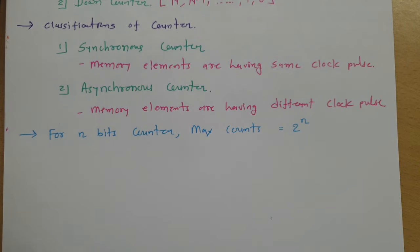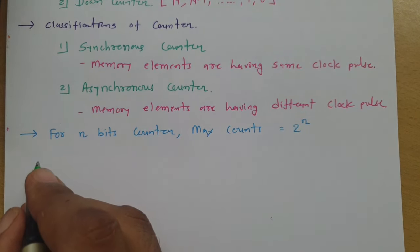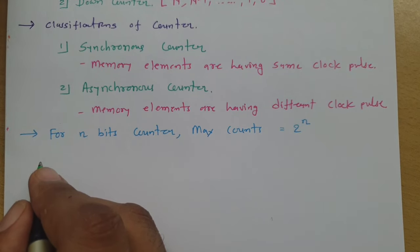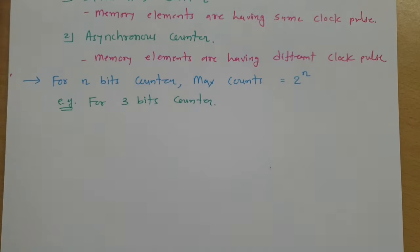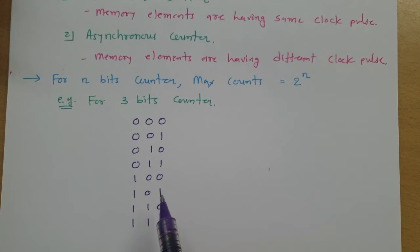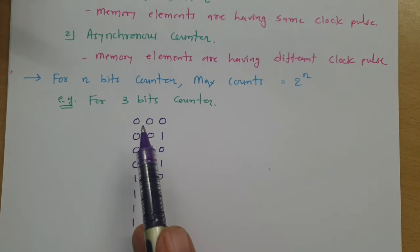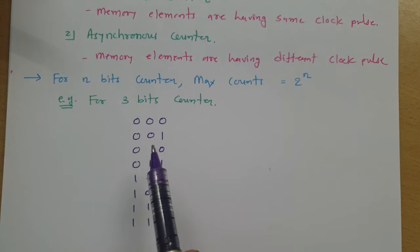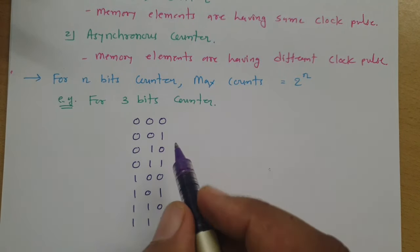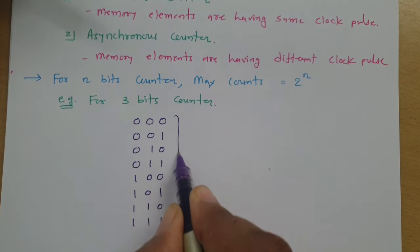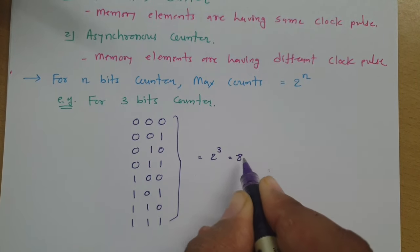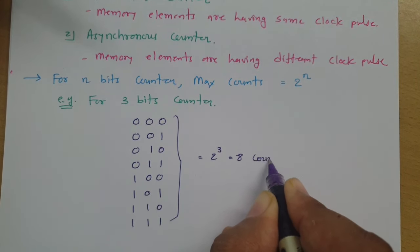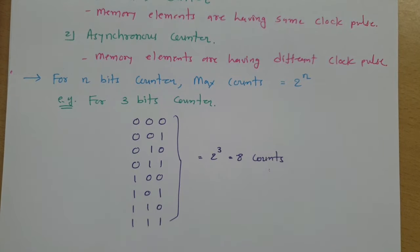For example, if we have a 3-bit counter, it will start counting from 0 0 0 and count up to 1 1 1. So the total number of counts is 2 to the power 3, which equals 8. There are a total of 8 counts in a 3-bit counter.